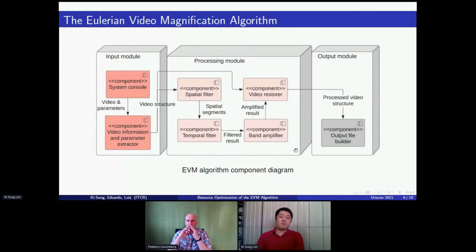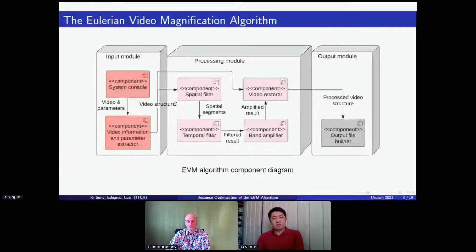For obvious reasons, the most important module of the algorithm is the processing module. For the input module and the output module, we do the codification and decodification of the input and output video. In the processing module, we show the basic data flow of the algorithm. The video structure that is contained in a vector of images is passed through a spatial filter that for each frame of the video divides different spatial frequencies using pyramids. Then each frame of the video is passed to a temporal filter where we select the desired frequencies to be amplified. In the component for band amplification, we amplify these selected frequencies. For the final component, we collapse the original video with the amplified frequencies to form a new video that is then encoded to a new video file with the magnification applied.